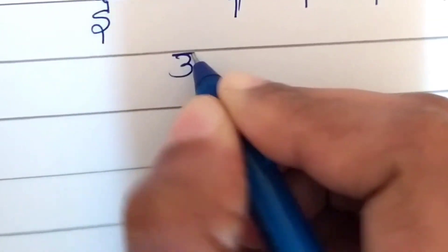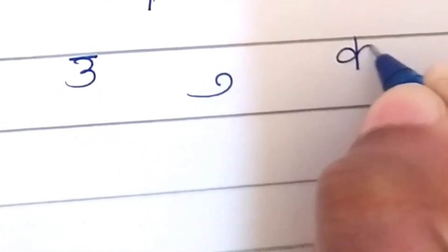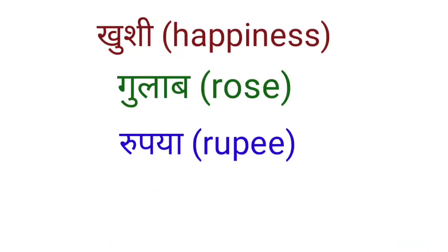Next vowel is U. This is the symbol for the sound U. Kushi, Gulab, Rupaya, Sabun.